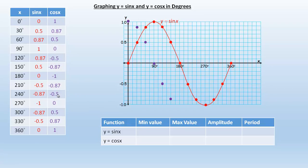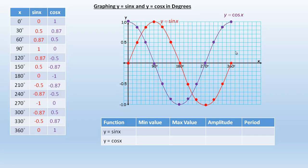At 180 it's at negative 1, so 180 would be negative 1 right there. At 210 it's at negative 0.87 — that's that point right there. At 240 it's at negative 0.5, so 240 is right here. At 270 it's at 0. At 300 it's at 0.5, so 300 would be here. At 330 it's 0.87, right about there. And then 360 is up to 1. So if we draw a smooth curve between those, that's what the cosine function looks like.